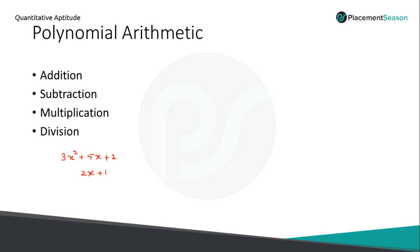Let's consider these two polynomials: 3x squared plus 5x plus 2, and another polynomial 2x plus 1. The first polynomial is a trinomial because we have three terms, and the second one is a binomial — we have two terms.